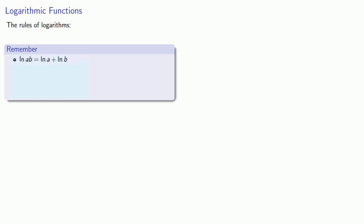The log of a product is the sum of the individual logs. The log of a quotient, a over b, is log a minus log b. The log of a power, a to the n, is n log a. And the log of an nth root is 1 over n times log a.